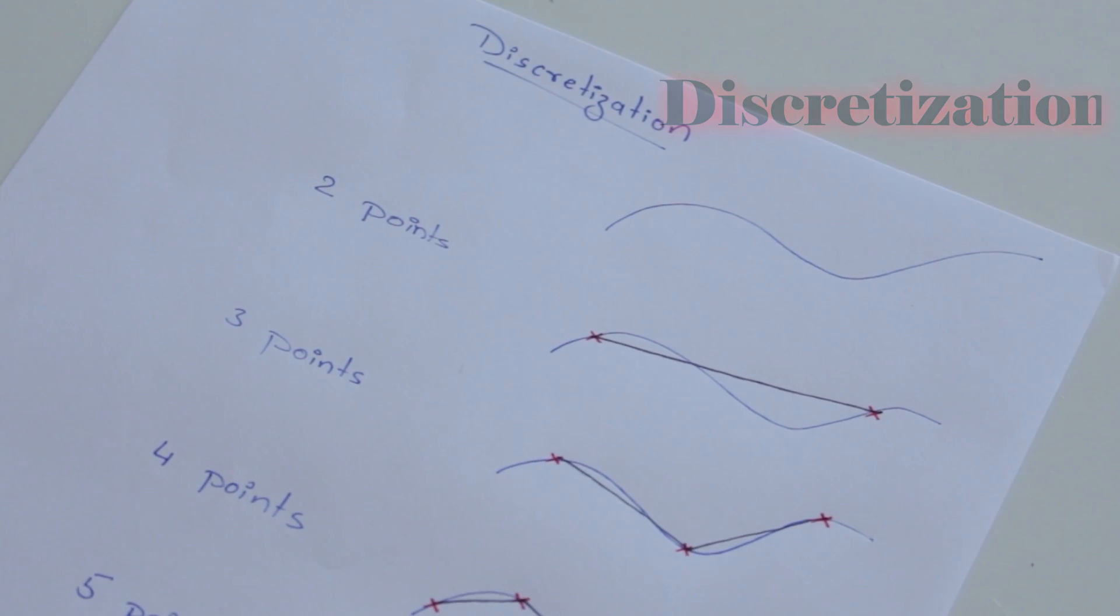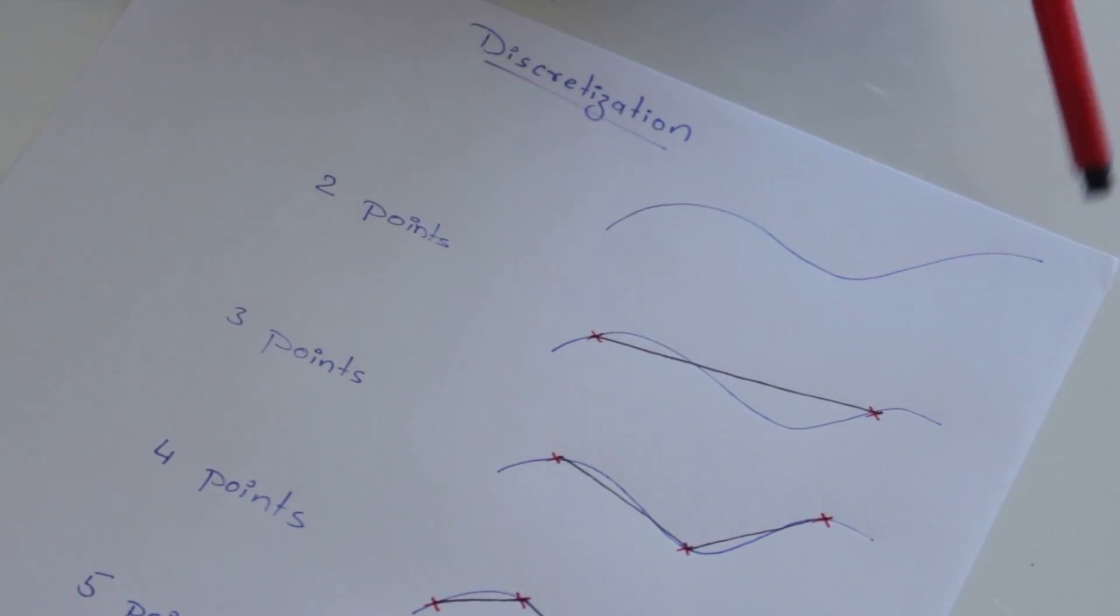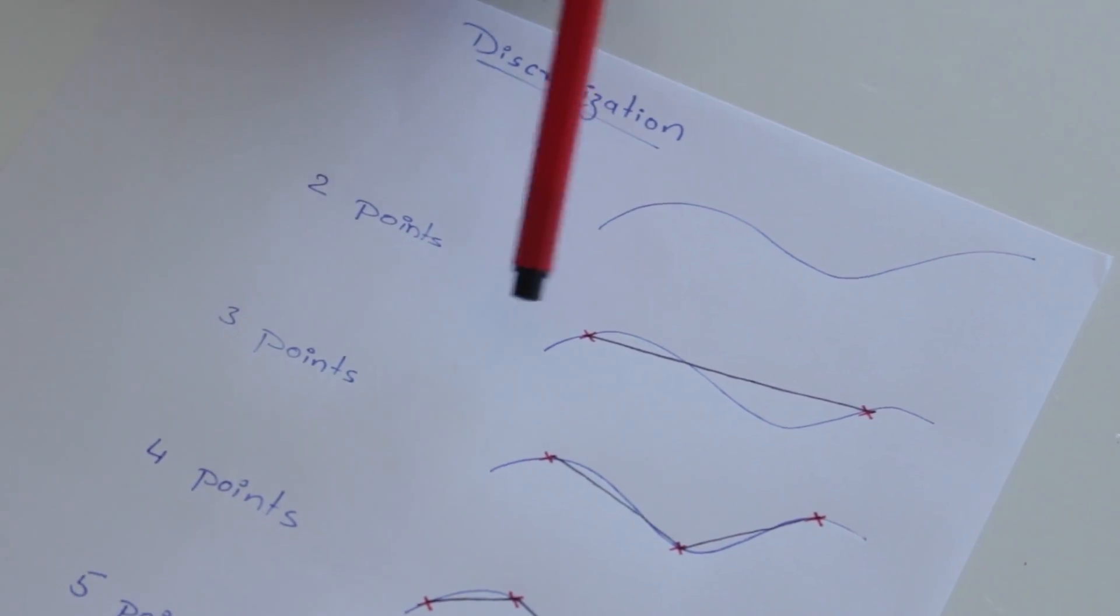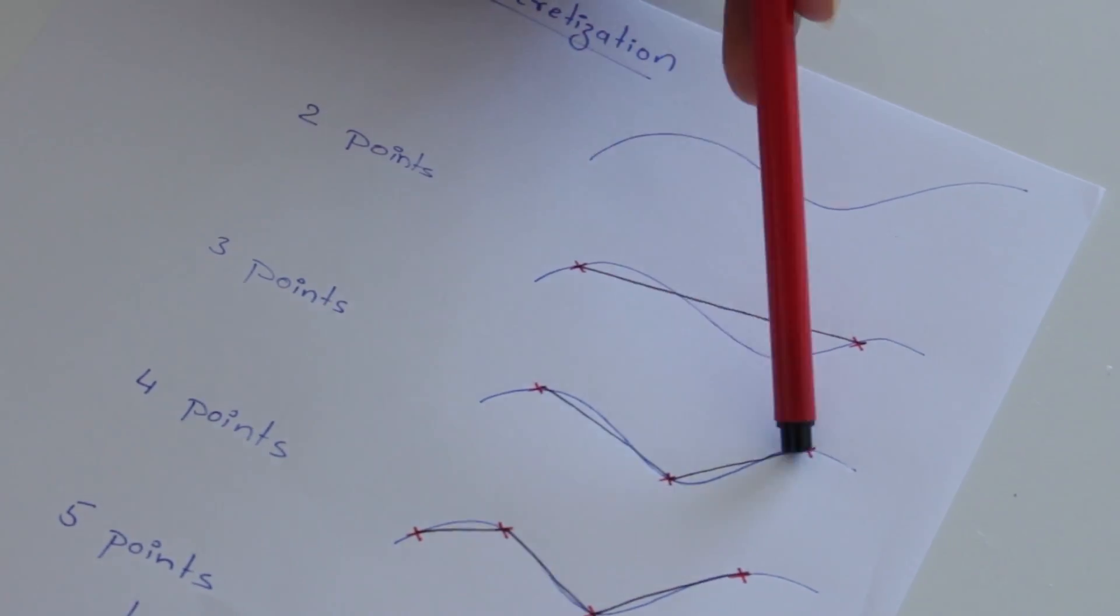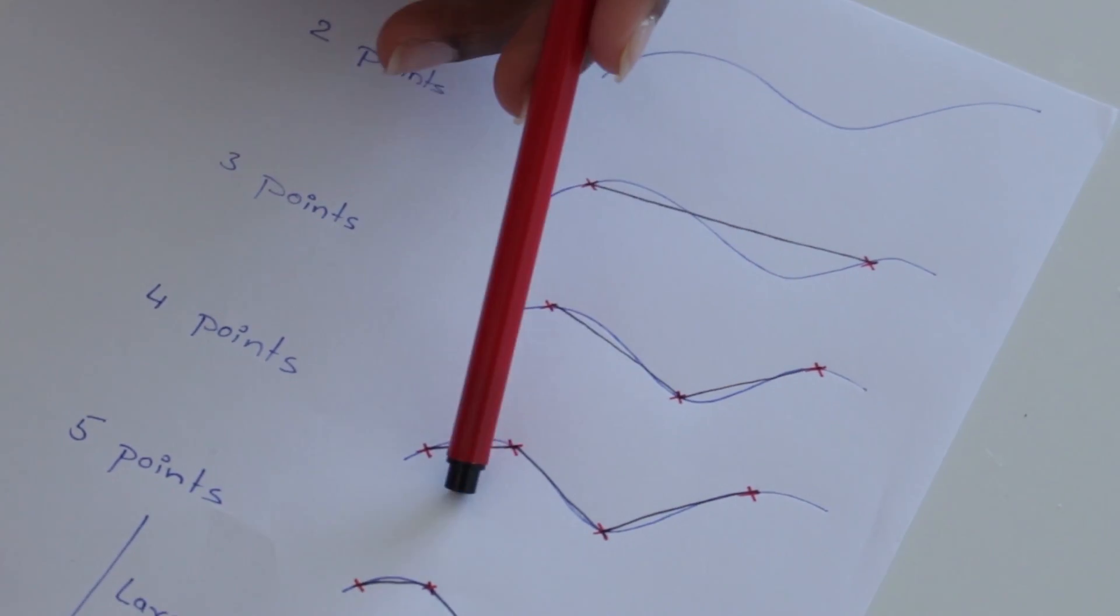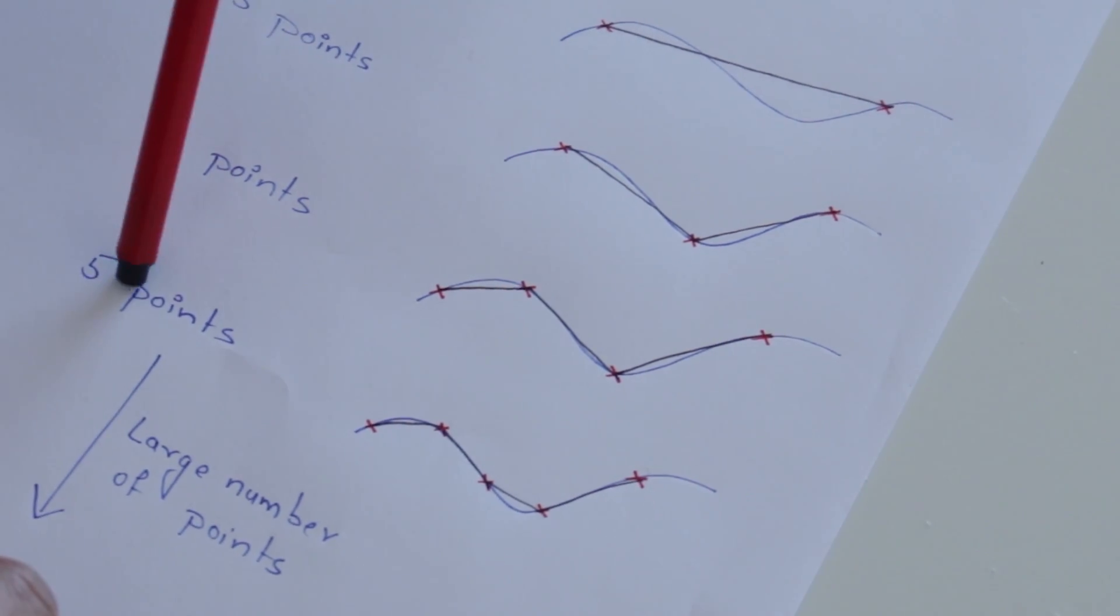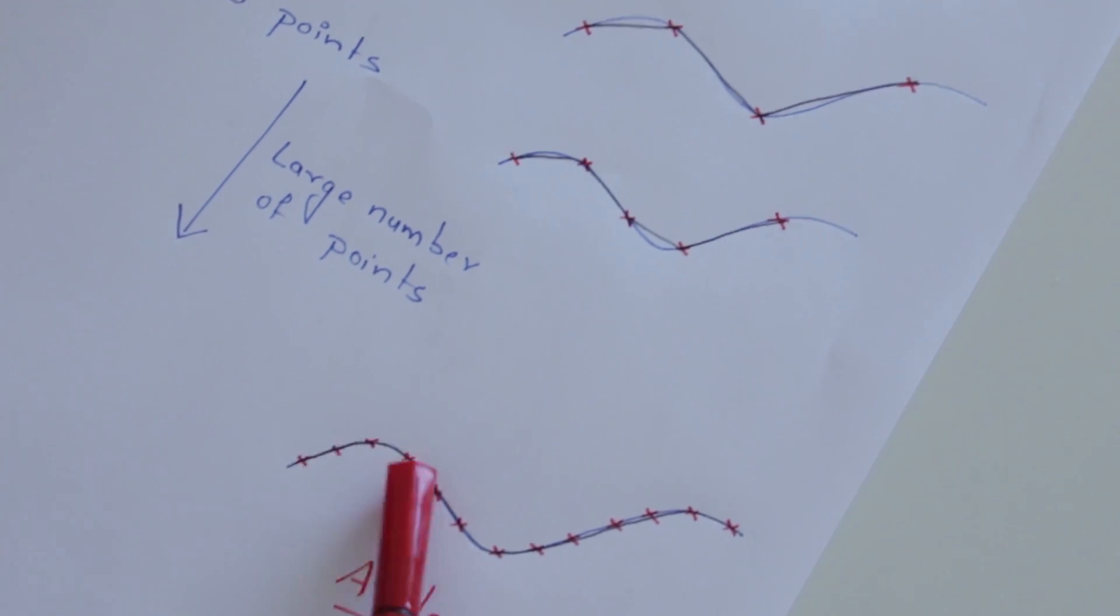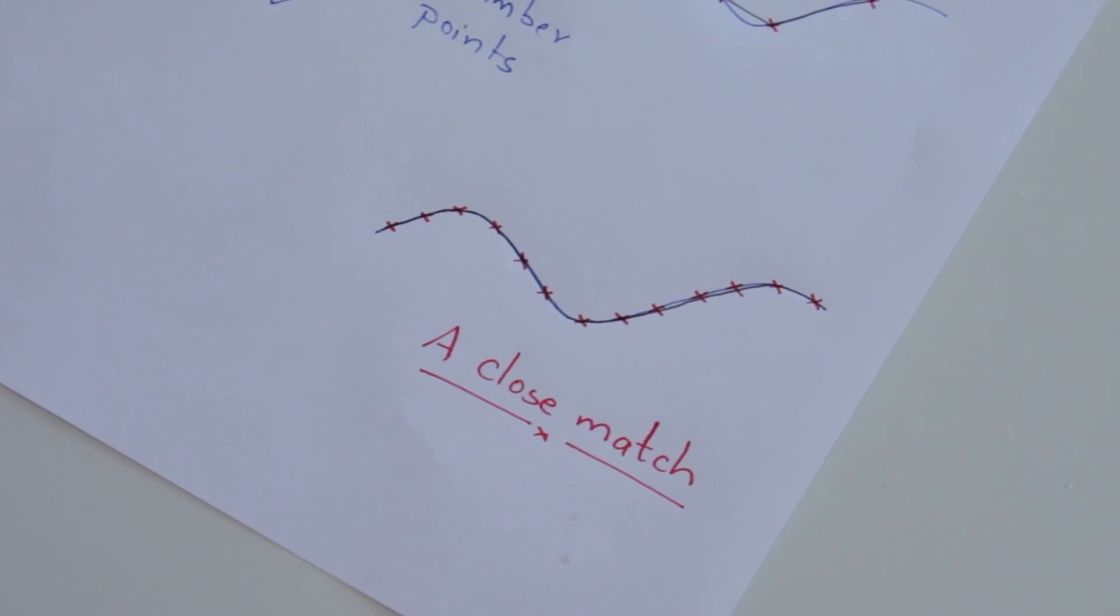To understand discretization a little better, let's take a simple analogy. Suppose you had to recreate this curve. And initially, you were just given two points on the curve. Well, you would get a straight line which looks nothing like the curve. Now suppose you took three points. It's a bit better, but still not exactly the curve. Four points, five points, it keeps getting better and better. Now imagine if you increase the points to infinity, the number of points. You would be able to replicate the exact curve and that is the power of discretization.